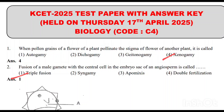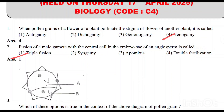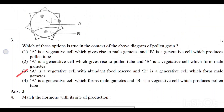Second question: fusion of male gamete with the central cell in the embryo sac of an angiosperm is called triple fusion. That is the correct answer.